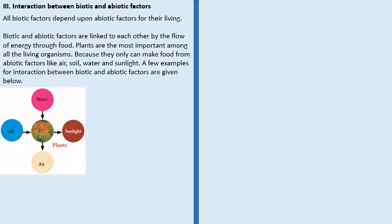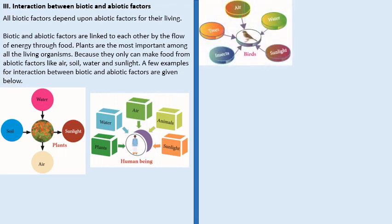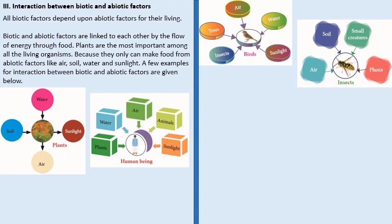What is the interaction between biotic and abiotic factors? All biotic factors, that means all living things, depend on abiotic or non-living things for their living. These both are linked to each other by the flow of energy through food. Plants are the most important among all living organisms because they can make their own food using abiotic factors like air, soil, water and sunlight.